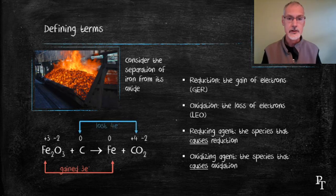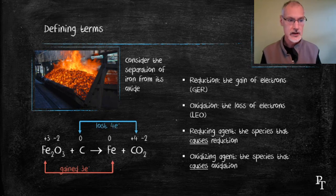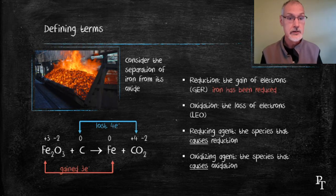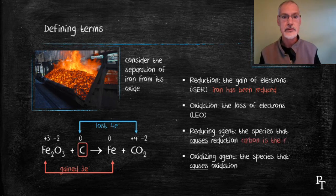Simultaneously, the carbon has lost four electrons. From my definitions, I can say that iron has been reduced because it gained electrons. The substance that caused this is called the reducing agent, in this case carbon.